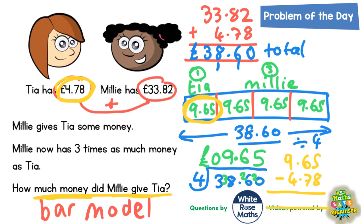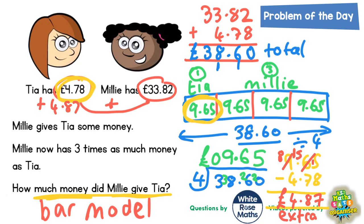Five subtract eight we can't do, so we borrow — the six becomes a five, and the one we borrowed makes that five into fifteen. Fifteen take away eight is seven. Five take away seven we can't do, so borrow from the nine, which becomes an eight. The one we borrowed makes that fifteen. Fifteen take away seven is eight, and eight take away four is four. So £4.87 is the extra amount that Millie gave to Tia — that's our final answer: £4.87.